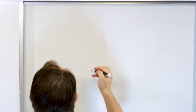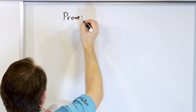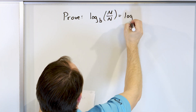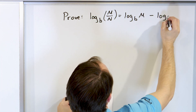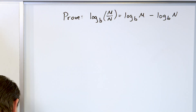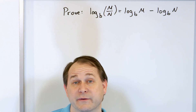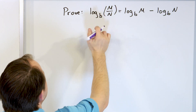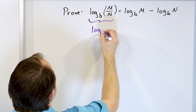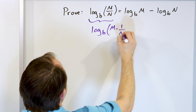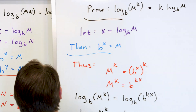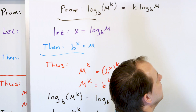Let's prove that log base b of m over n equals log base b of m minus log base b of n. This proof is going to be very similar to what we did before. The first thing we recognize is that m over n is really the same as m multiplied by 1 over n. Since we know what happens when we multiply things, we can use a similar approach.